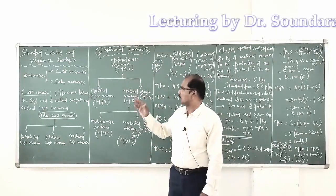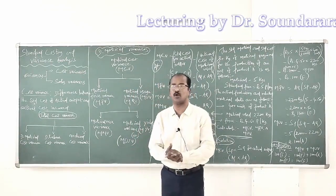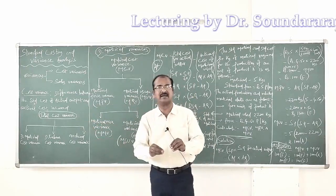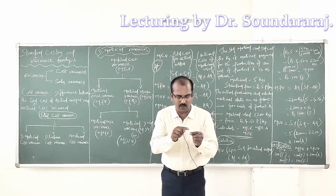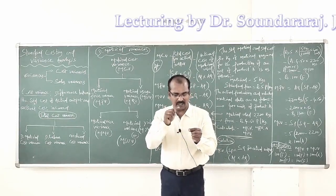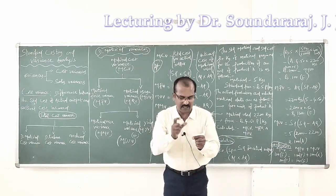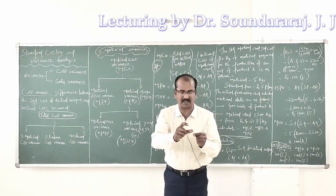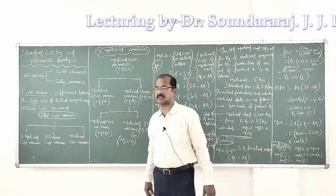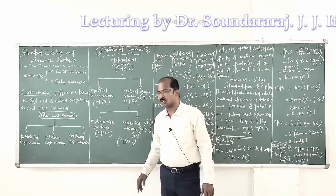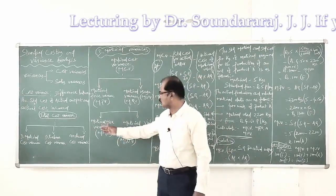What is the meaning of cost variance? It is the difference between the standard cost of actual output and the actual cost incurred for the actual output. For example, what is the standard cost of producing 100 units of a given product, and what is the actual cost incurred to produce those same 100 units? The actual cost is compared with the standard cost and we understand the reasons for any deviations — that's what cost variance is about.